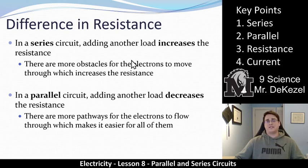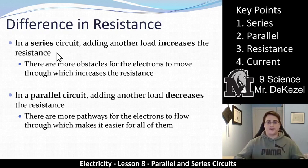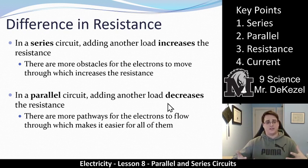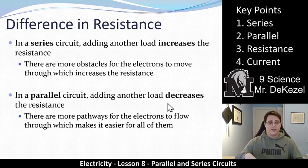There's a difference in the resistance of series and parallel circuits. In a series circuit, when you add another load, it increases the resistance — there's only one path, so you're adding more obstacles for the electrons to move through. If there are two bulbs instead of one, that's harder to get through; four bulbs instead of two, even harder. In a parallel circuit, if you add another load or another pathway, it actually decreases the resistance, because there are more pathways for the electrons to flow through, making it easier for all of them.